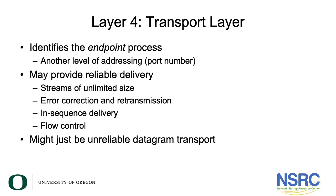Layer four in the OSI model is the transport layer. What layer four adds is a way of identifying individual processes on a machine. An IP address will identify a machine, but a port number will identify a process that's running on a machine — so that might be your web browser or web server, determining which bit of software you need to deliver the traffic to. That's the fundamental service the transport layer provides.